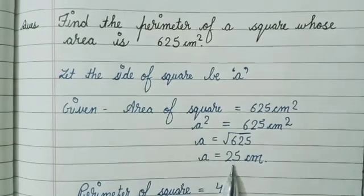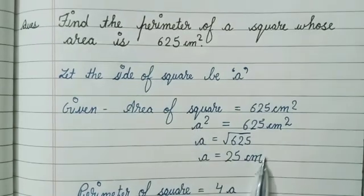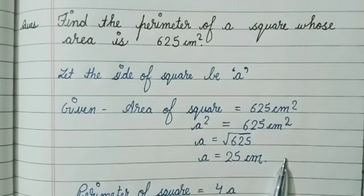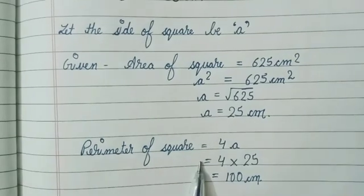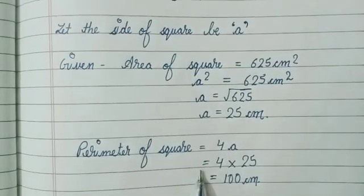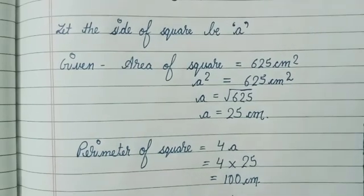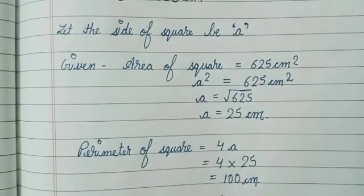After taking the square root we found the side, then we could easily find the perimeter of the square: 4 times the side, giving us 100 cm. This is the perimeter of the square and this is the answer.